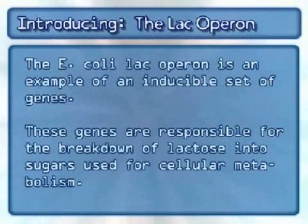If that set of genes is turned on, those genes are transcribed into mRNA and then made into polypeptide chains. The lac operon is a set of genes that E. coli has involved in the breakdown of lactose, which is a sugar present in milk. It codes for proteins used to break down lactose into sugars the cell can then use — similar to how you have genes that code for amylase in your saliva, which digests starch into sugars your body can use.